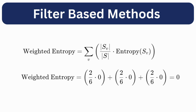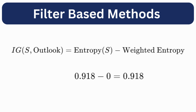Once we have the entropy, we calculate the weighted entropy. Weighted entropy is calculated by dividing the instances in each feature subset by the total number of instances in the dataset. There were two instances in each subset — sunny, overcast, and rain. We put this into the formula and multiply by the entropy. Since entropy was 0, the weighted entropy is 0. We then subtract the weighted entropy from the dataset entropy: 0.918 minus 0 gives an information gain of 0.918 for the outlook feature.